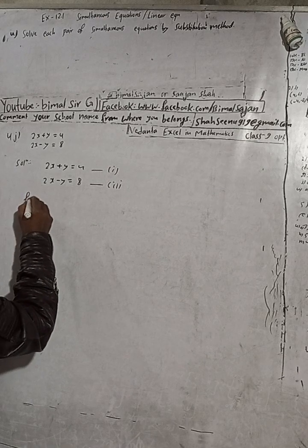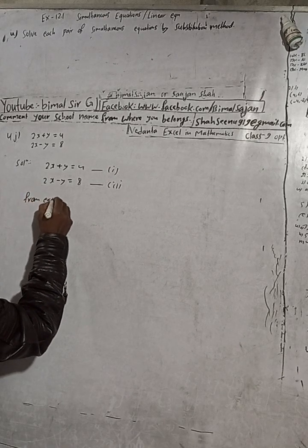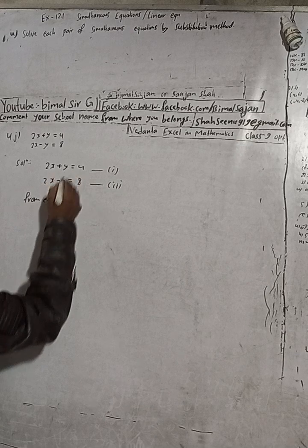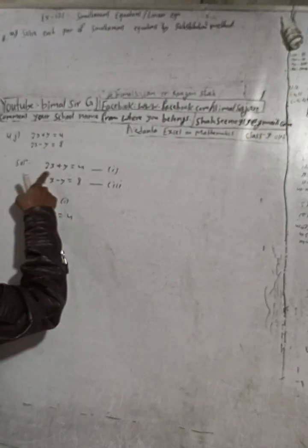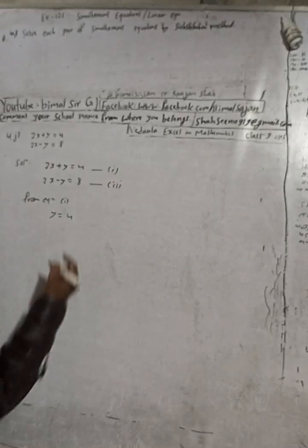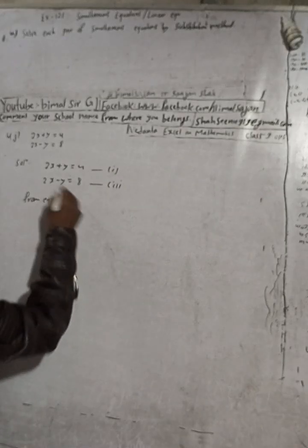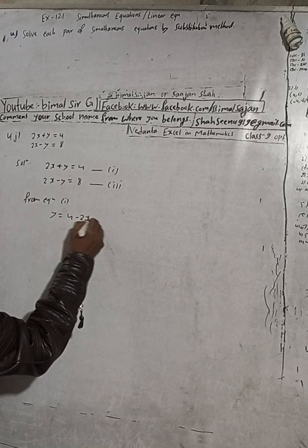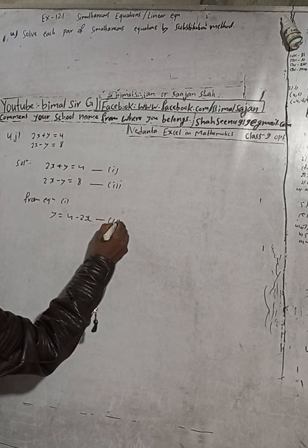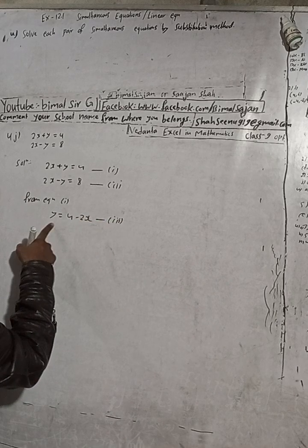From equation 1, we can make y equal to 4 minus 2x. The 2x will go to the right side as minus 2x. So this is our equation 3.